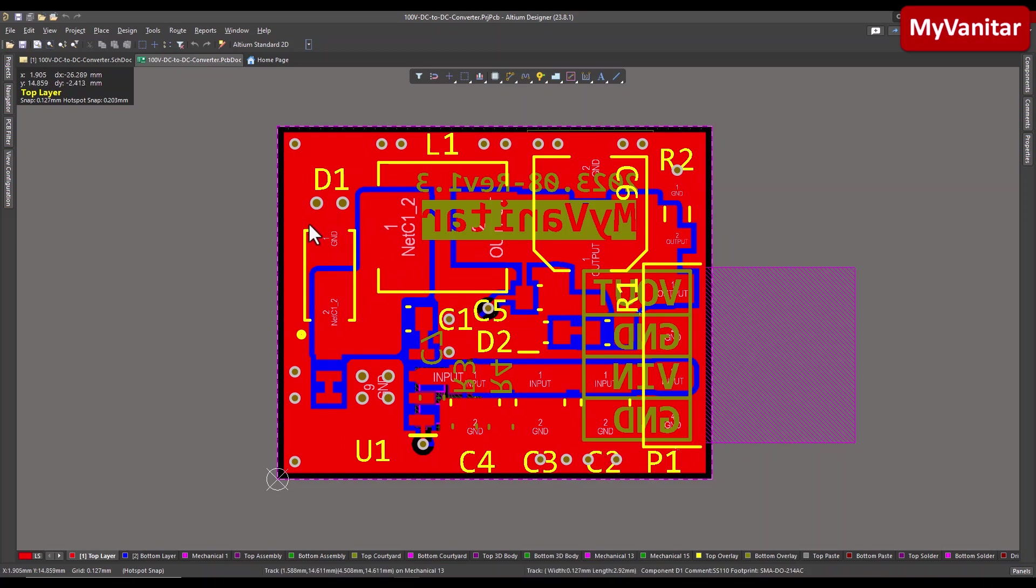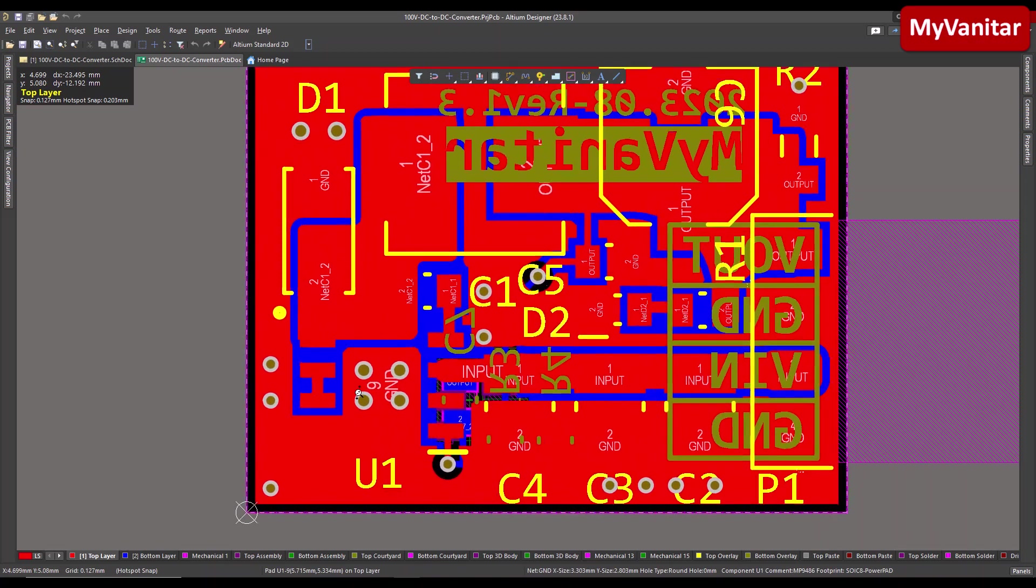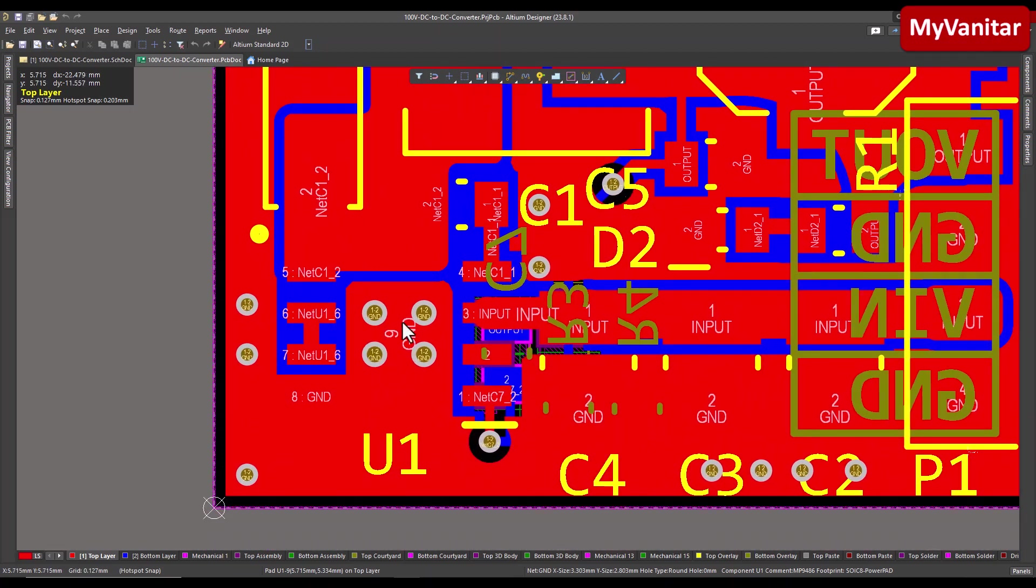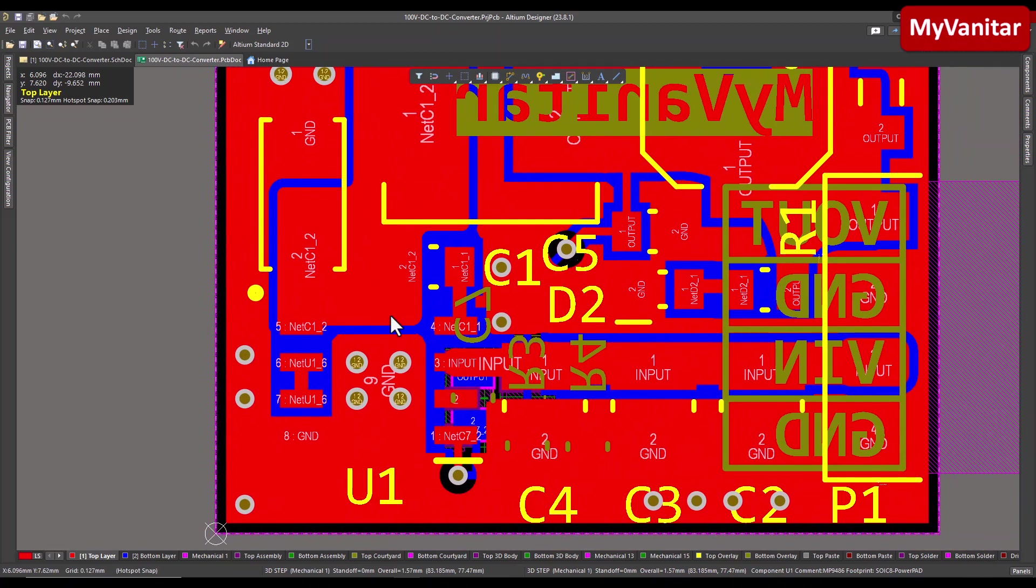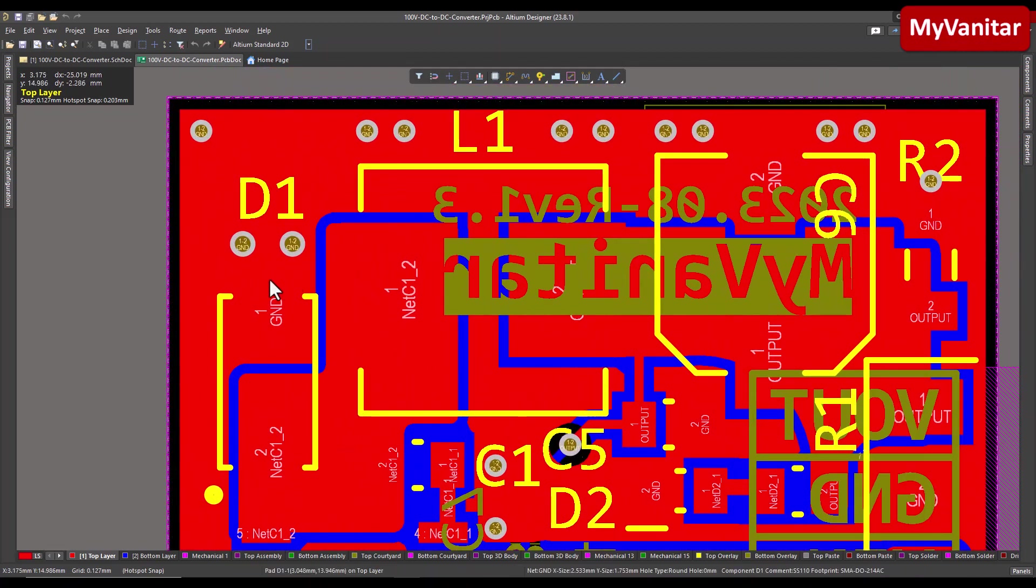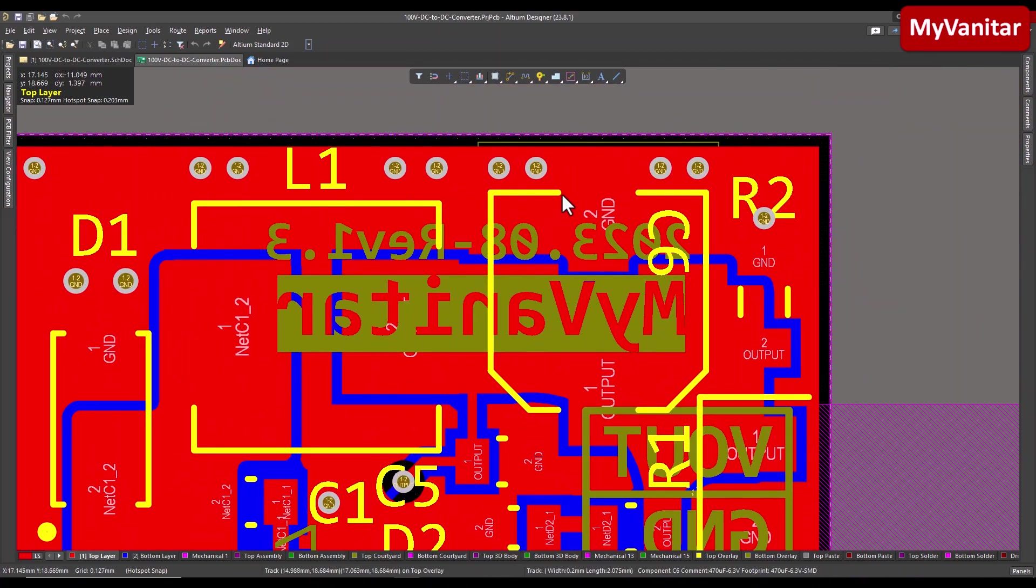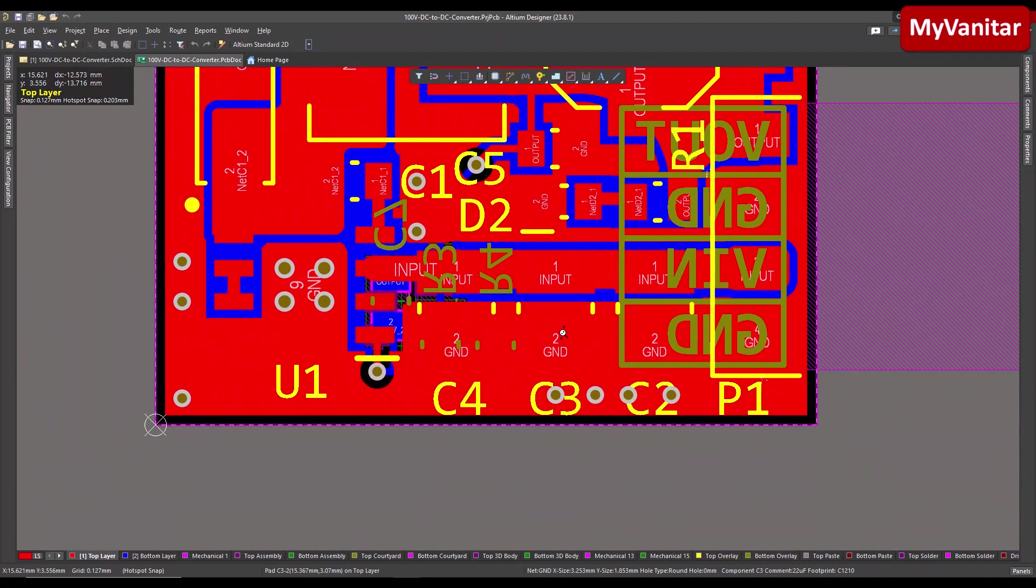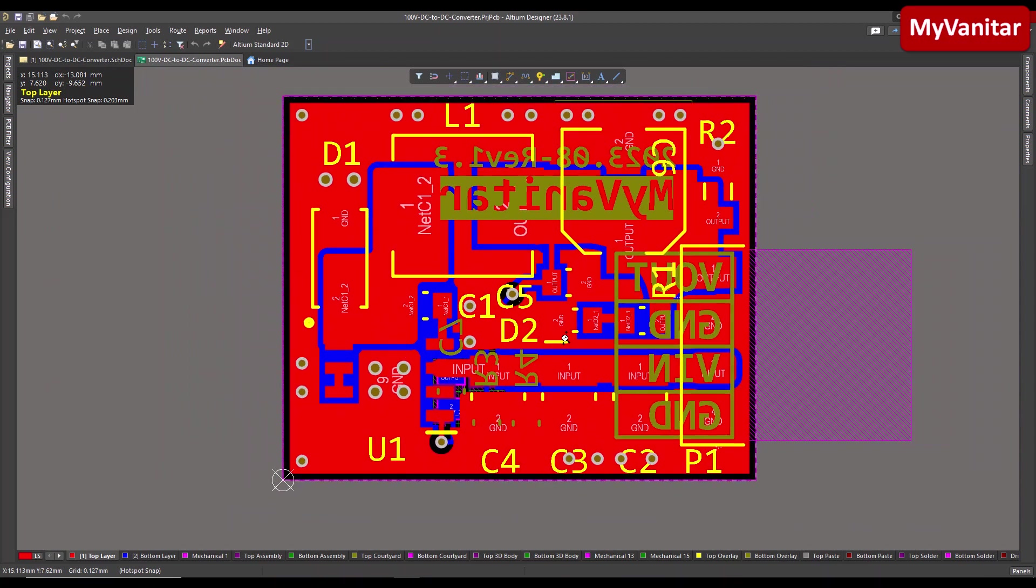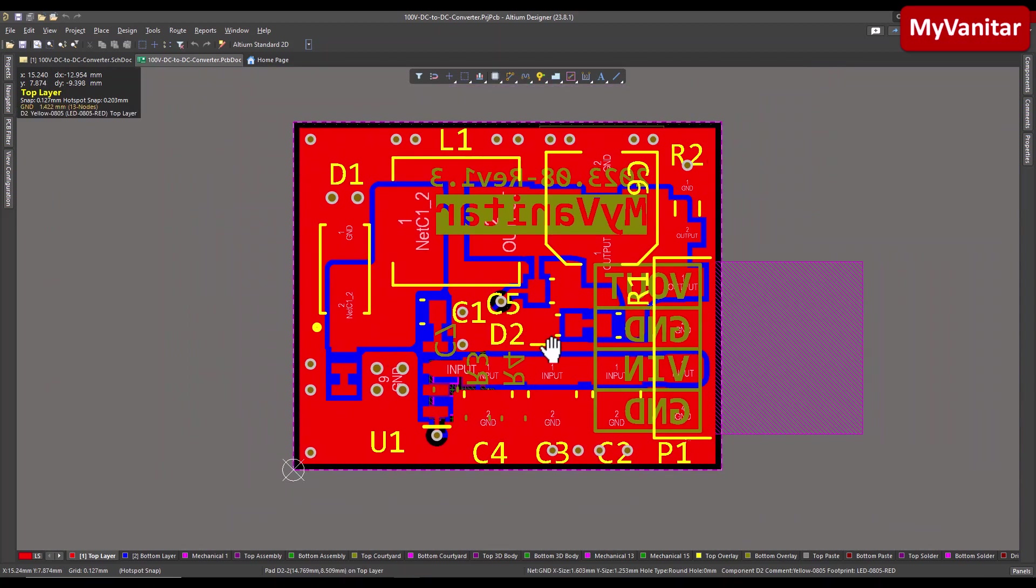The same thing should be happened on the top layer and where there is a free space, I have filled the free space with ground. Also, I put these vias near the critical components below the buck converter chip. I put these two, these four thick vias and also near the ground pin of the diode, near the ground pin of the capacitors.